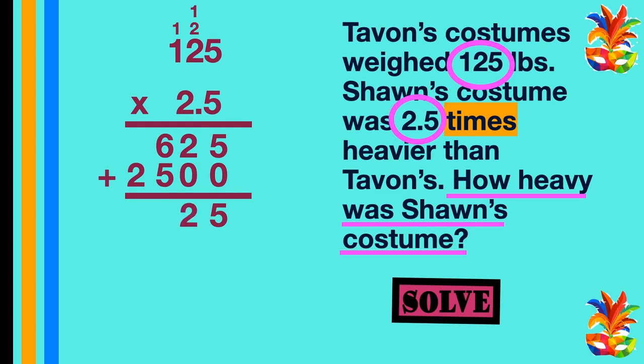2 times 5 is 10, 2 times 2 is 4 plus 1 is 5, and 2 times 1 is 2. Now we add: 5 plus 0 is 5, 2 plus 0 is 2, 6 plus 5 is 11, 2 plus 1 is 3. There is only one digit behind the decimal point, so in our answer there should only be one digit behind the decimal point. Our answer is 312 and 5 tenths.